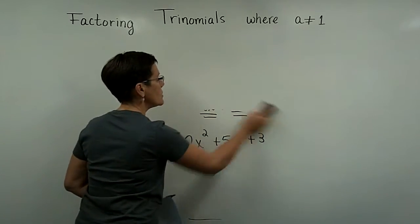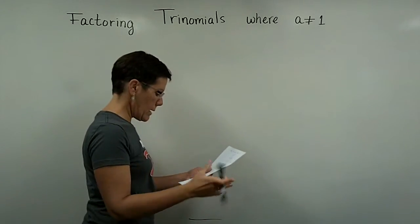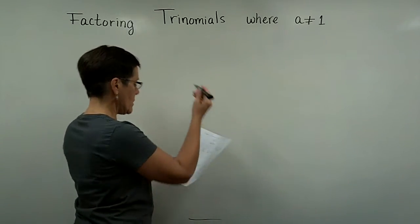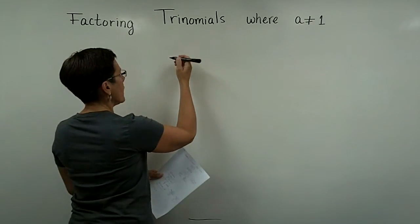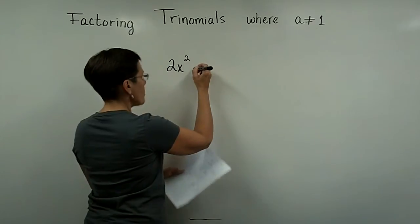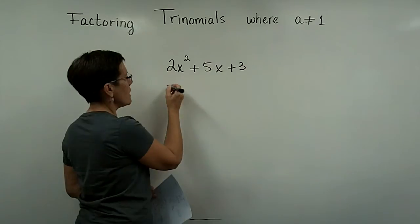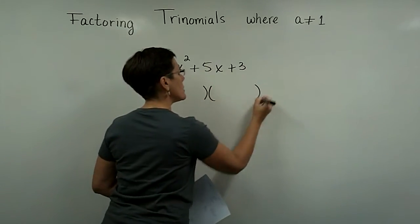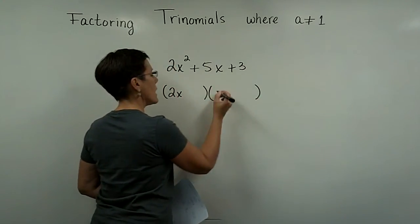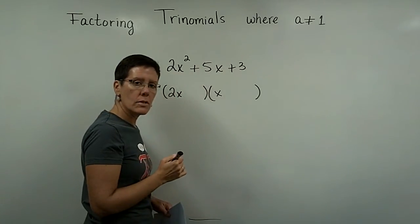Many of us do not need a process. Let's go ahead and use this very example again. Let's say I have this 2x squared plus 5x plus 3. Many of us can just look at that and say, well, I'm going to put a 2x here and an x here because I know that when I multiply those first terms together I'd get 2x squared.